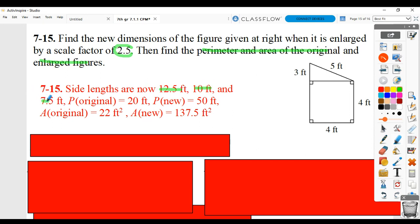Where those are coming from is 5 times 2.5 is how we got 12.5, 4 times 2.5 is how we got 10, and 3 times 2.5 is where we got 7.5.